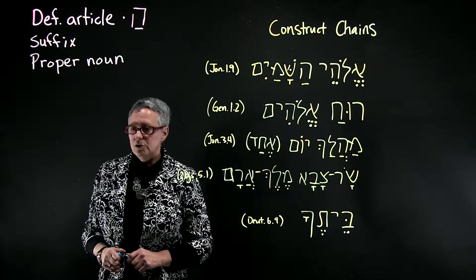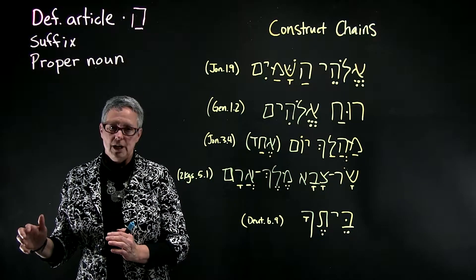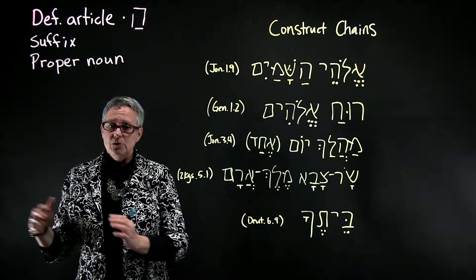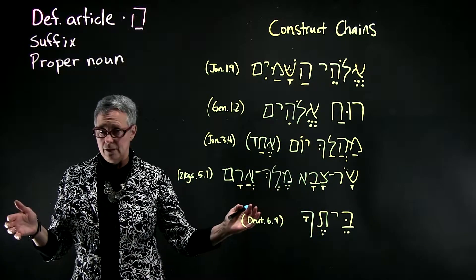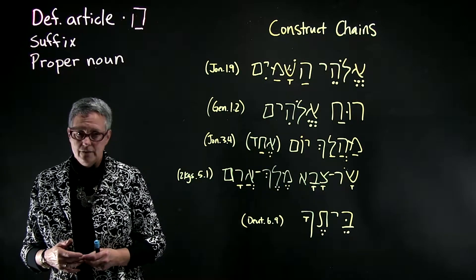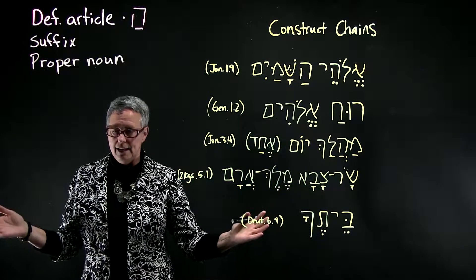Now a construct chain is definite if the last word in the chain is definite. So if the last word in the chain is definite then all the words in the chain will be definite. The same is true for indefinite. If the last word is indefinite the whole chain is indefinite.